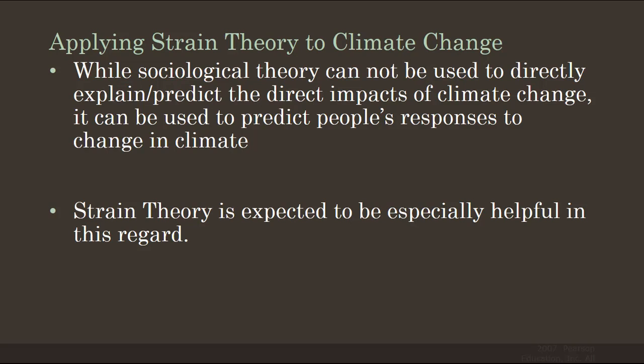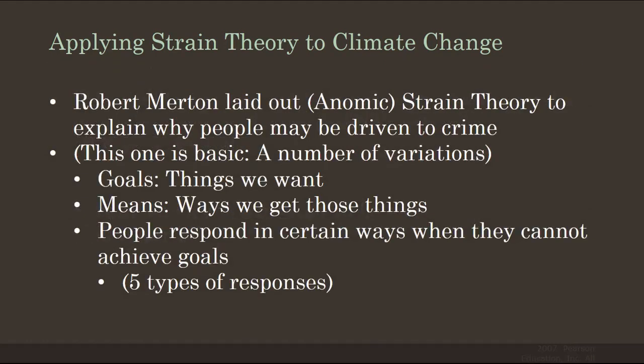Strain theory is a theory of sociological deviance that we talked about in Sociology 101, and also in courses on deviance. Just as a reminder, Merton laid out anomic strain theory to explain why people may be driven to crime. This is basic strain theory — there are a couple of other versions that are more complex.